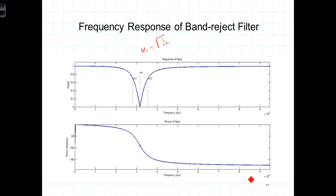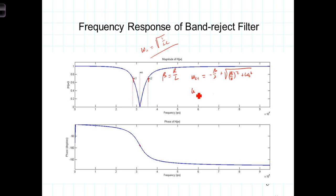To give the whole story: the bandwidth β is the same as it was for the passband filter, where β = R/L. The center frequency ω₀ is the same: ω₀ = √(1/LC). The cutoff frequencies are also the same: ω_C1 = −β/2 + √((β/2)² + ω₀²) and ω_C2 = +β/2 + √((β/2)² + ω₀²). And finally, Q = ω₀/β, the same definition as for the passband filter.